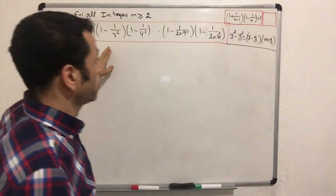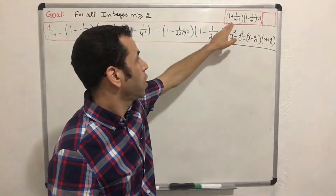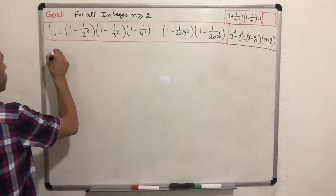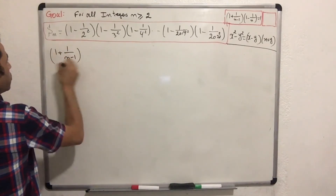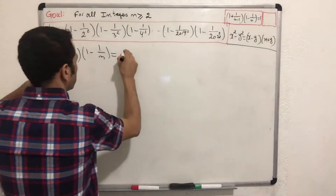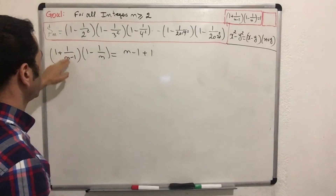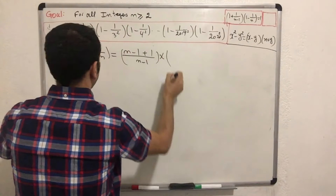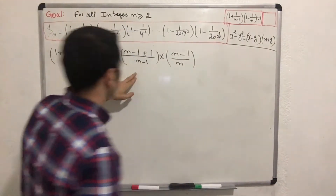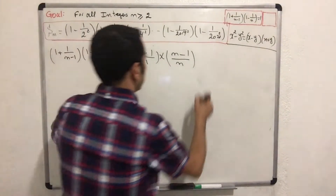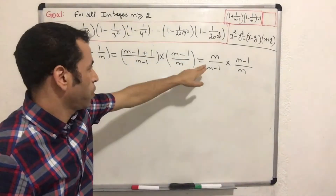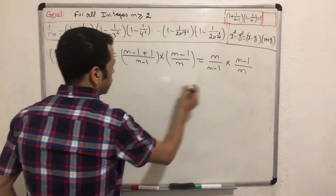Before I start evaluating this product, I'm going to verify this identity that I'll use as a tool in order to get this product evaluated. Let's verify that: (1 plus 1 over n minus 1) multiplied by (1 minus 1 over n) equals, expanding the first term: n minus 1 plus 1 over n minus 1, and the second term: n minus 1 over n. Canceling the 1 minus 1 equals 0 terms, our identity becomes n over n minus 1, multiplied by n minus 1 over n. Simplifying n by n and n minus 1 by n minus 1, our identity equals 1.